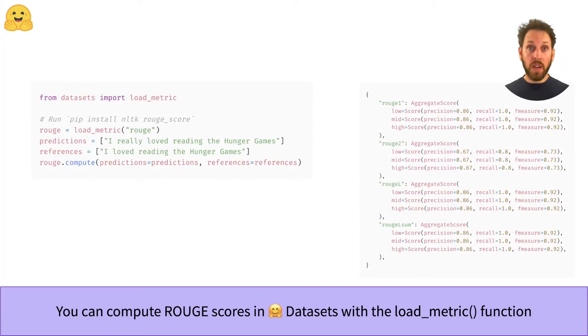Now, to compute ROUGE scores in the Datasets library is very simple. You just use the load metric function, provide your model summaries along with the references, and you're good to go.